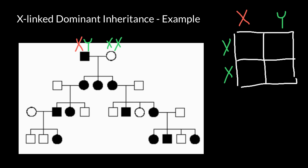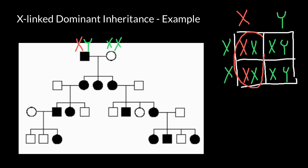In the Punnett square, we have the defective X chromosome inherited from the father's side and the normal X chromosome inherited from the mother's side. Then defective X from the father, normal X from the mother, normal X from the mother, and normal Y from the father. You can see that all females with two X chromosomes would be affected.